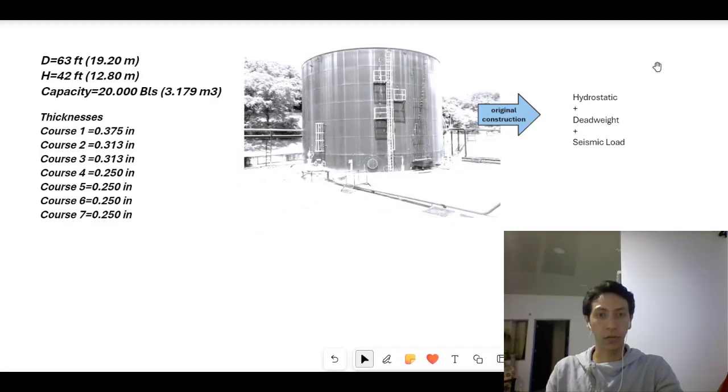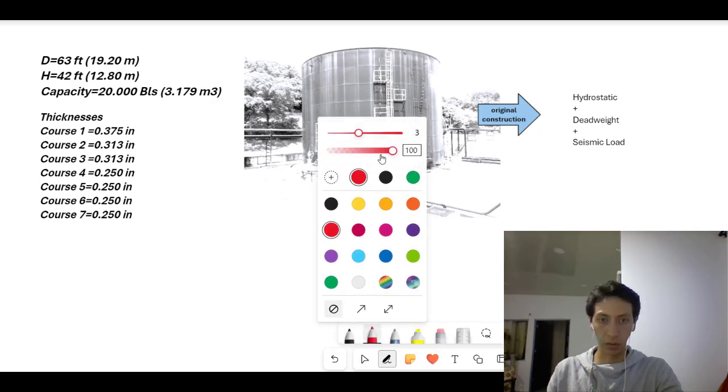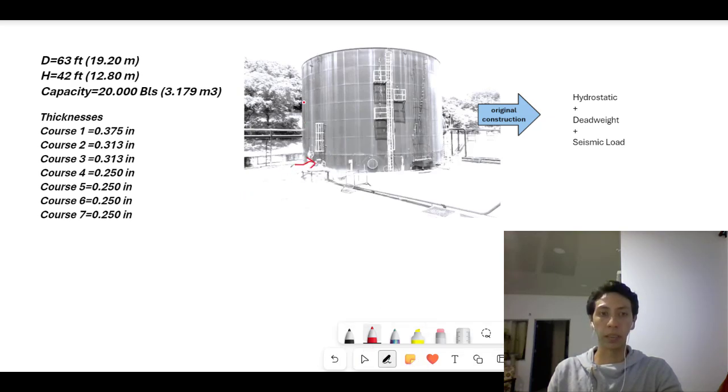Okay, this is the storage tank. It has a diameter of 63 feet, a height of 42 feet. This is a typical configuration for the oil industry. We will consider in the assessment seven courses where course number one is this one of the lower part and course number seven is this one at the upper part. We will consider hydrostatic load, dead weight related to the roof weight and the shell weight and the seismic load.